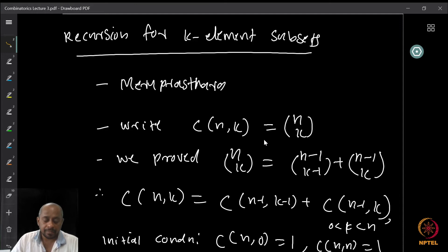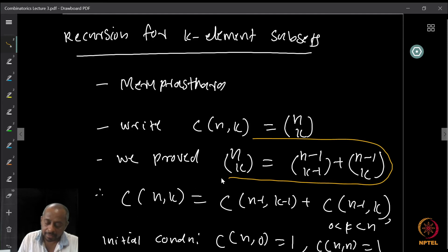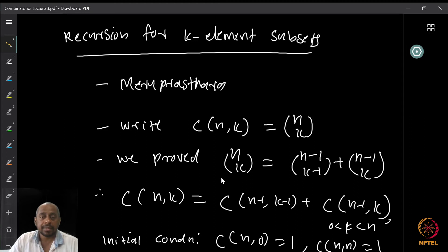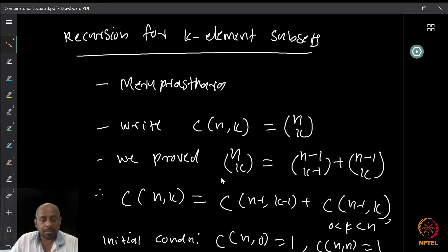We already proved that n choose k equals n-1 choose k-1 plus n-1 choose k, using a combinatorial proof. We can write the recurrence relation as C(n,k) equals C(n-1, k-1) plus C(n-1, k) for 0 less than k less than n, with initial conditions C(n,0) equals 1 and C(n,n) equals 1. These are the boundary conditions, and together they define a recursion formula.